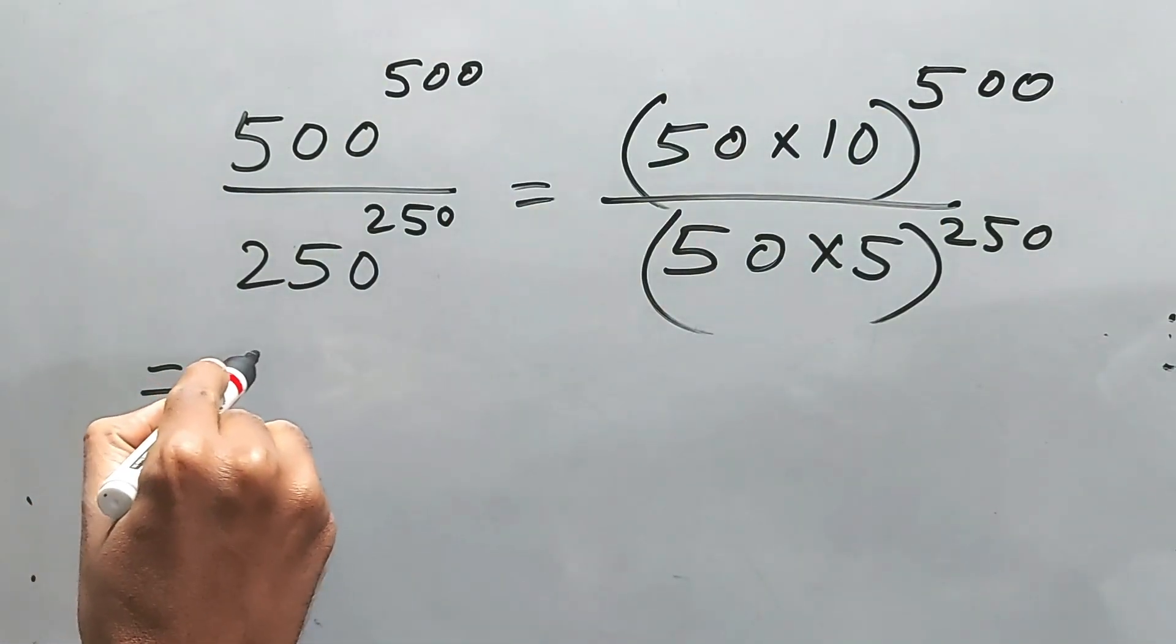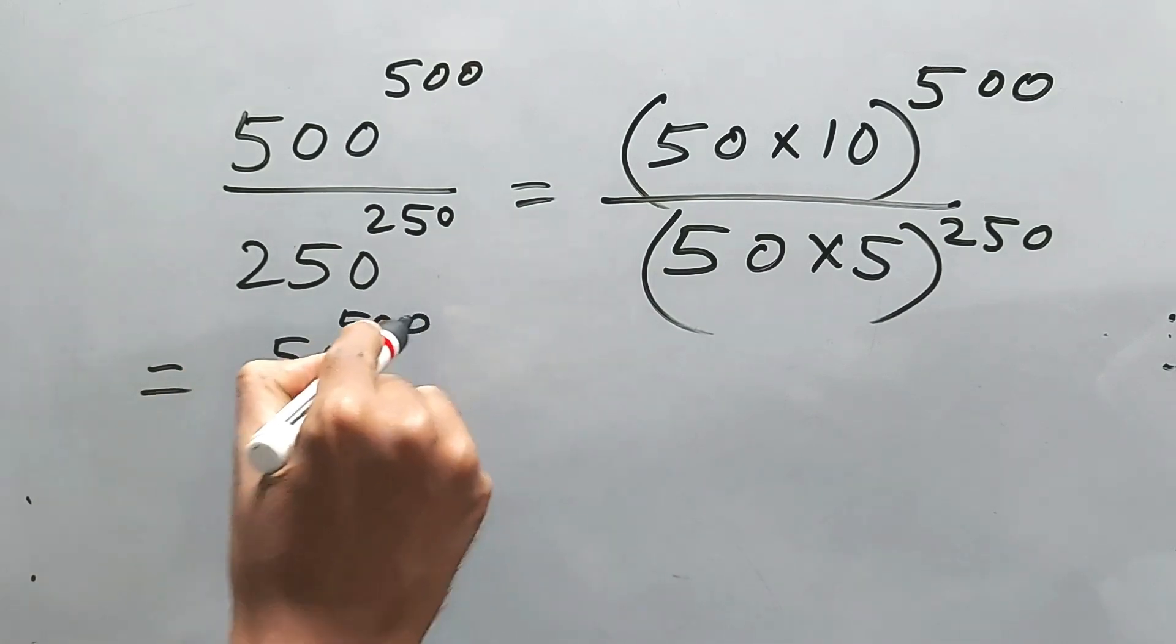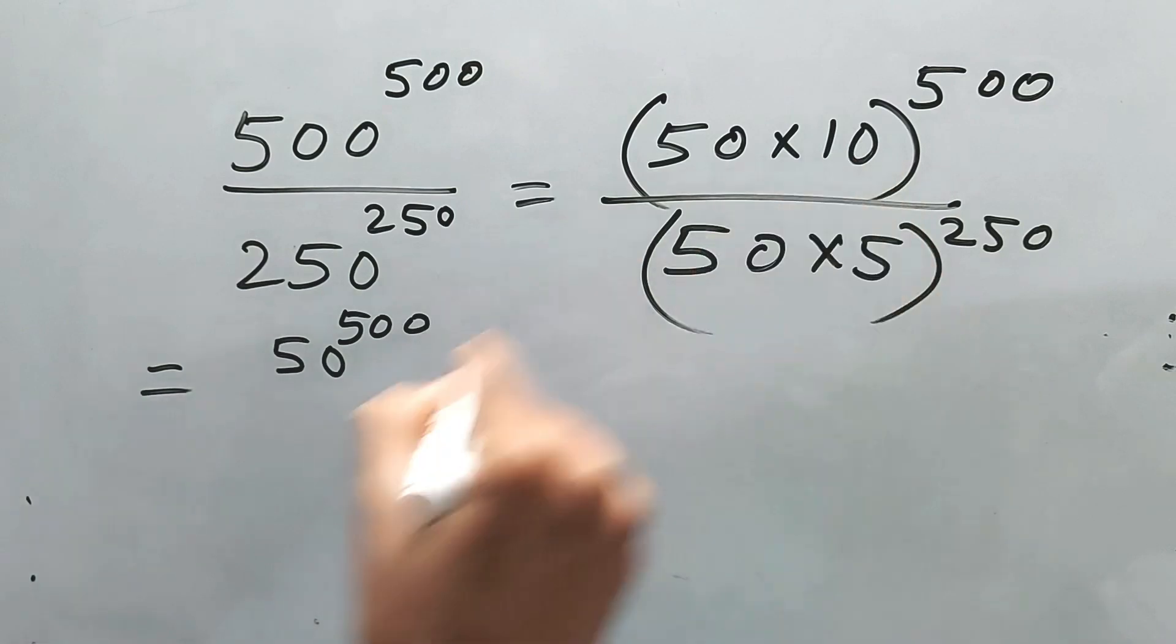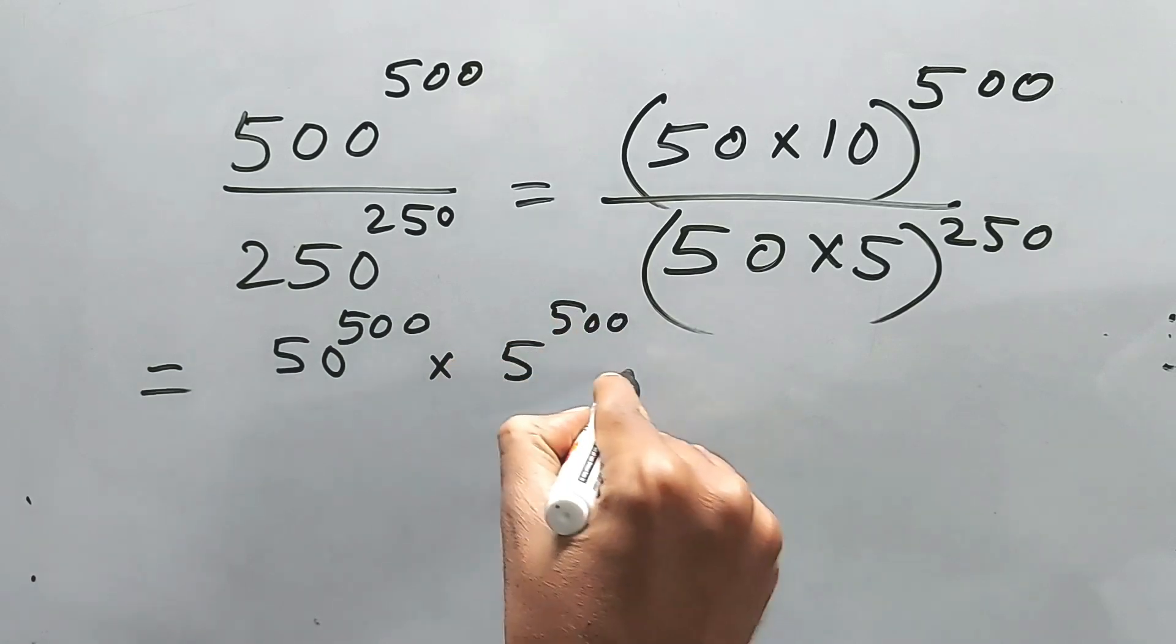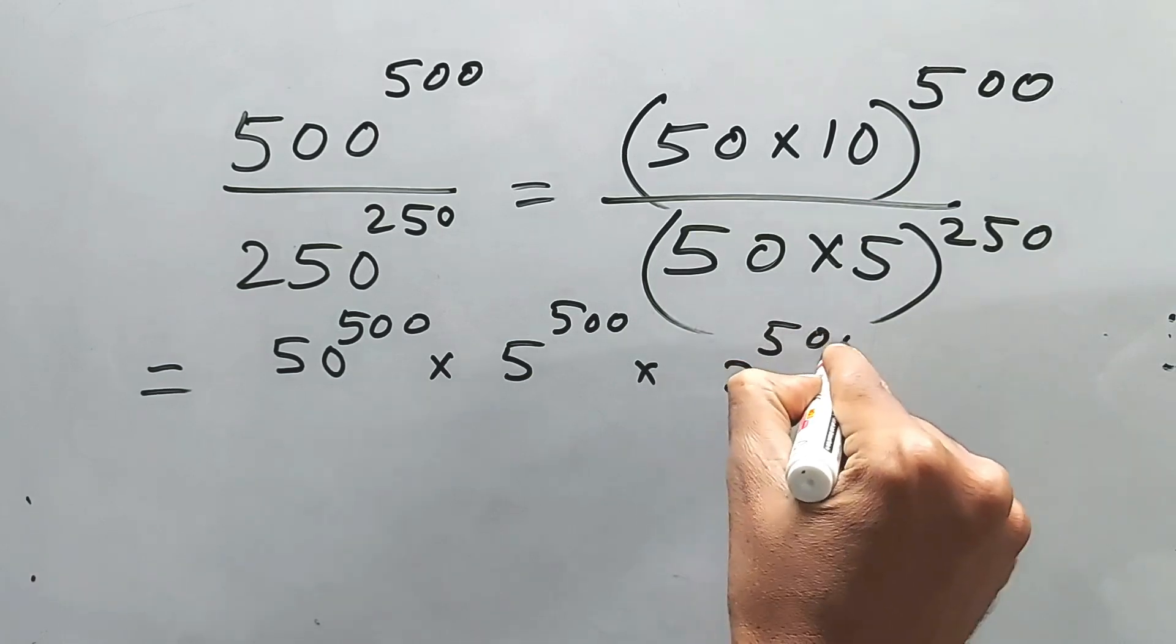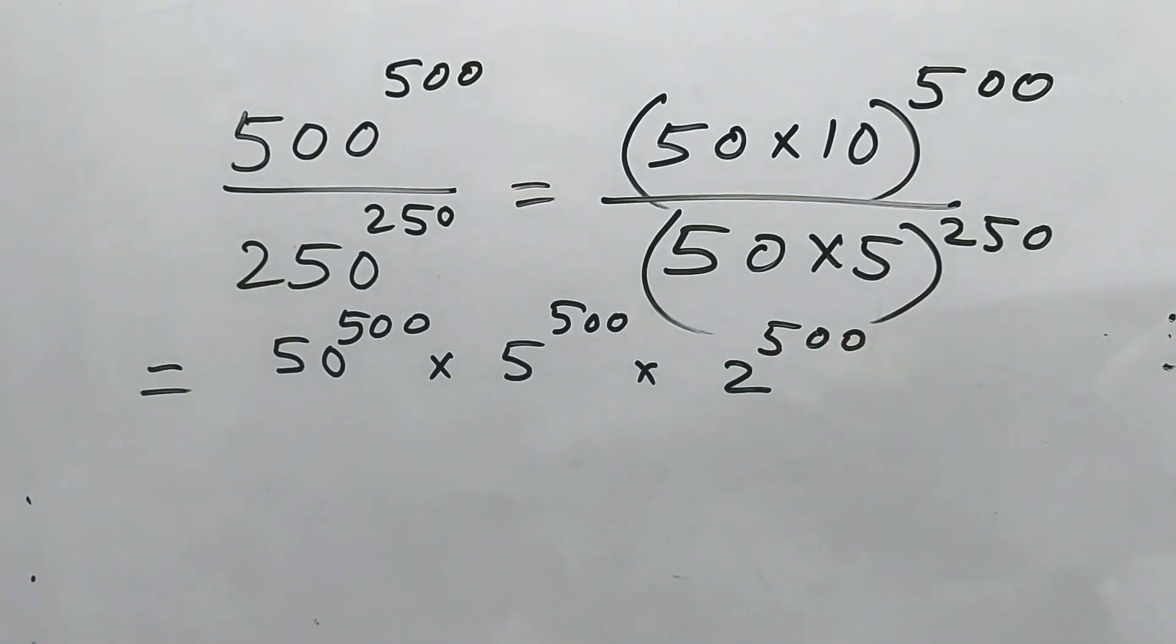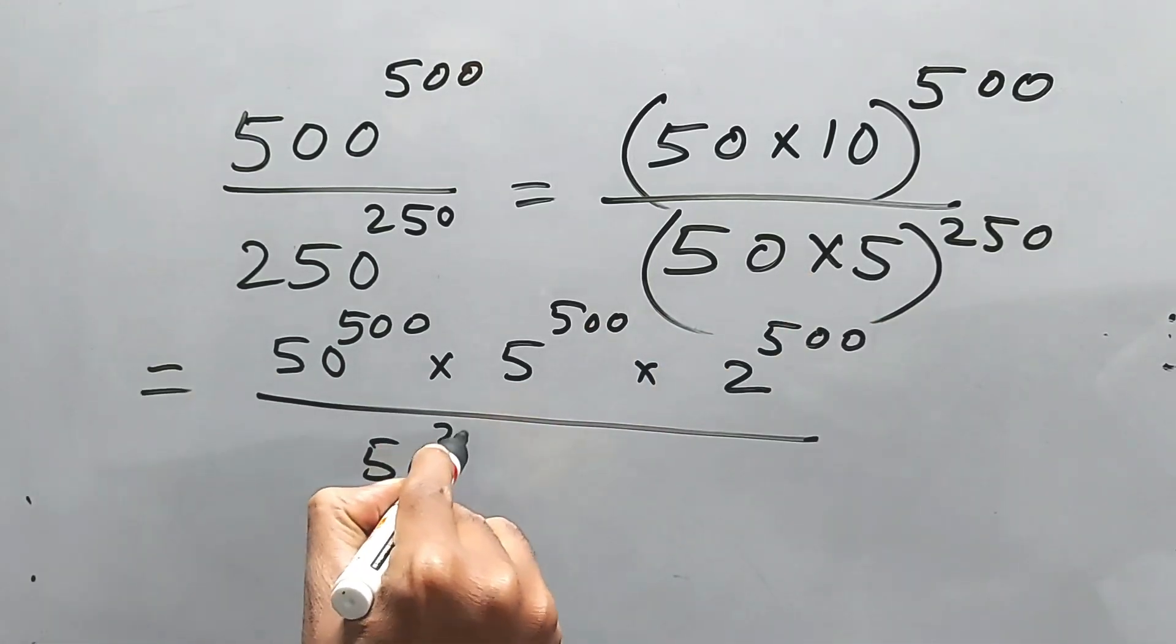So after we take all these things out, 50 to the power 500 we can write, and this 10 means 5 to the power 500 and 2 to the power 500. At the bottom, 50 to the power 250 and 5 to the power 250. Sorry for the writing.